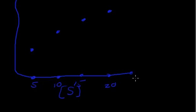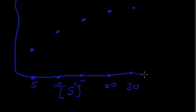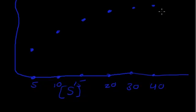If you increase the velocity further to 30, you get again the same velocity. If you increase the substrate concentration to 40, you get the same velocity. At 50 you also get the same velocity.